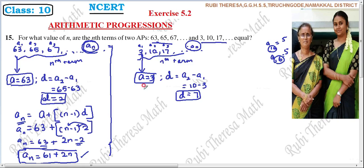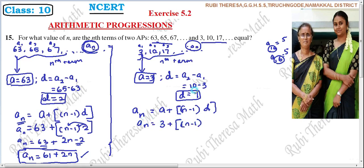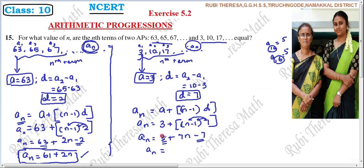Now for the second sequence, we need to find the Nth term. An equals A plus (N minus 1) into D. Here A equals 3, and D equals 7. So An equals 3 plus (N minus 1) into 7. Multiplying inside: 7N minus 7. So 3 minus 7 is minus 4, giving An equals minus 4 plus 7N.